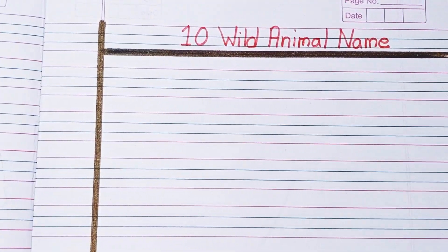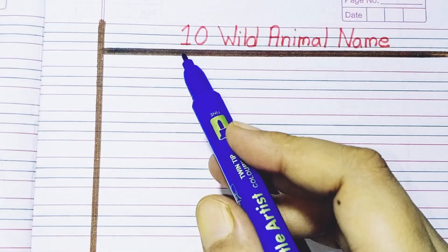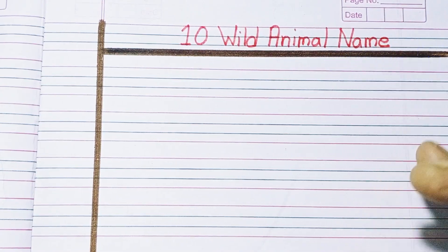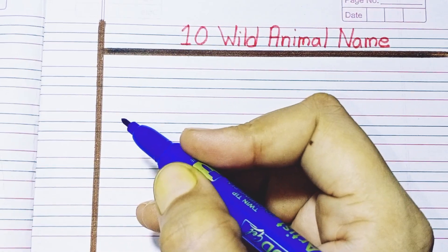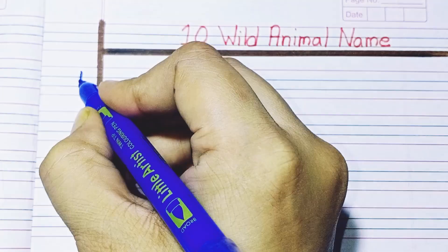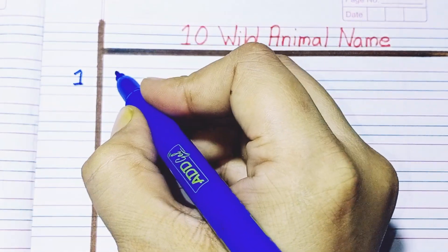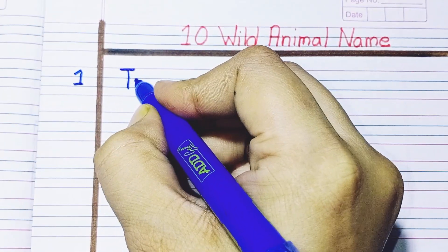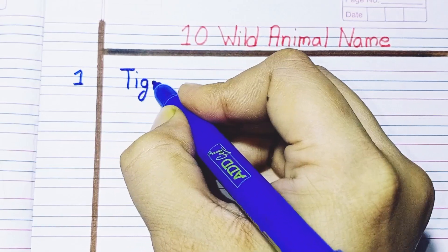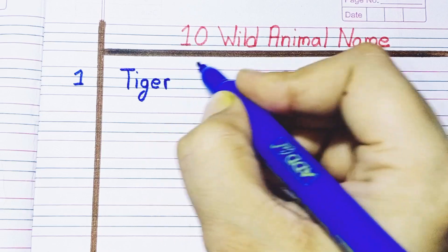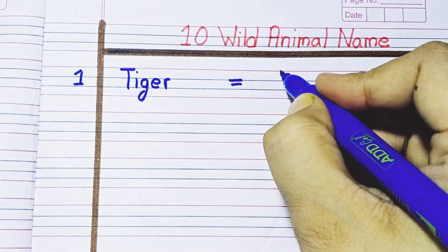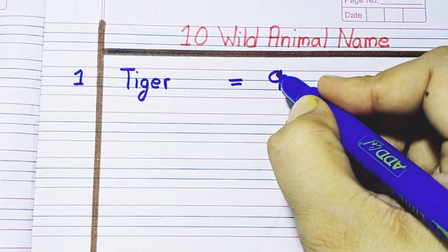Hello, welcome to Writing Talking TV. Today we learn and write 10 wild animal names in Hindi and English. Let's start. If you enjoy this video, please like, share, and subscribe to the channel. Number one: T-I-G-E-R, tiger. Tiger means baag.